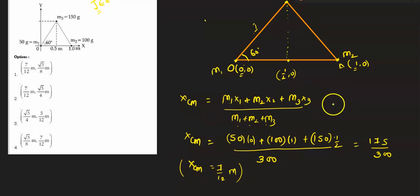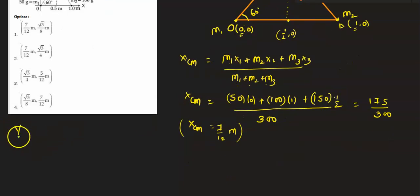For y coordinate, we'll apply the same formula. So we will get ycm as m1·y1 plus m2·y2 plus m3·y3 upon summation of the masses m1 plus m2 plus m3.